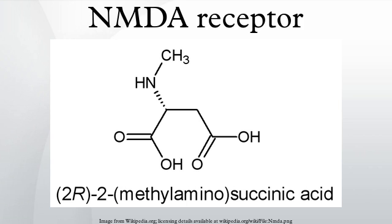Ligands and agonists: activation of NMDA receptors requires binding of glutamate or aspartate. In addition, NMDA receptors also require the binding of the co-agonist glycine for the efficient opening of the ion channel. D-serine has also been found to co-agonize the NMDA receptor with even greater potency than glycine. D-serine is produced by serine racemase and is enriched in the same areas as NMDA receptors. Removal of D-serine can block NMDA-mediated excitatory neurotransmission in many areas. Recently, it has been shown that D-serine can be released by both neurons and astrocytes to regulate NMDA receptors.